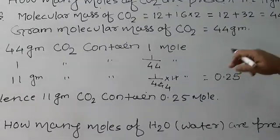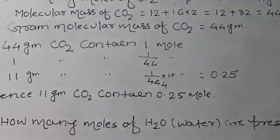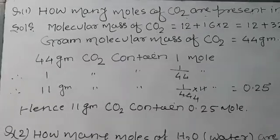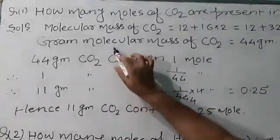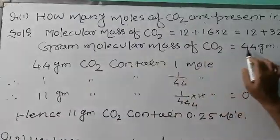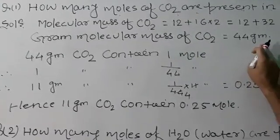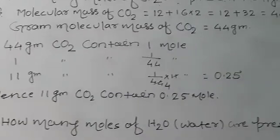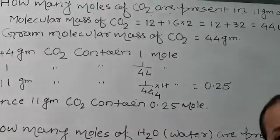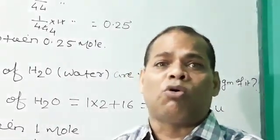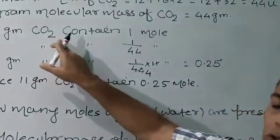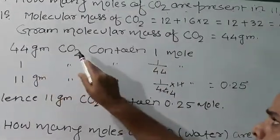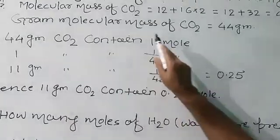Now, the gram molecular mass of CO2: when the molecular mass is expressed in grams, it is called gram molecular mass. So the gram molecular mass of CO2 equals 44 grams. Gram molecular mass is equivalent to 1 mole. Therefore, 44 grams of CO2 contains 1 mole.